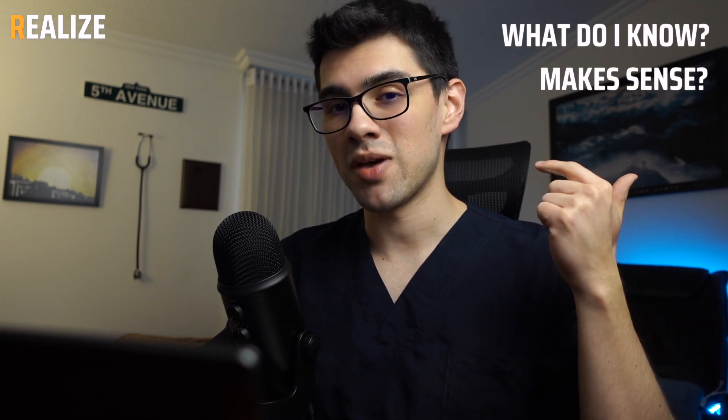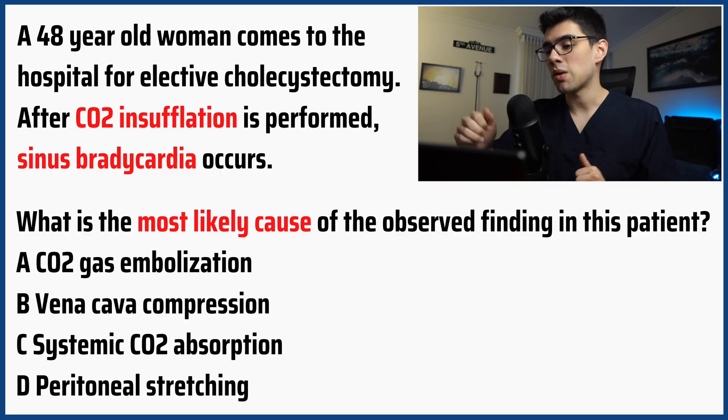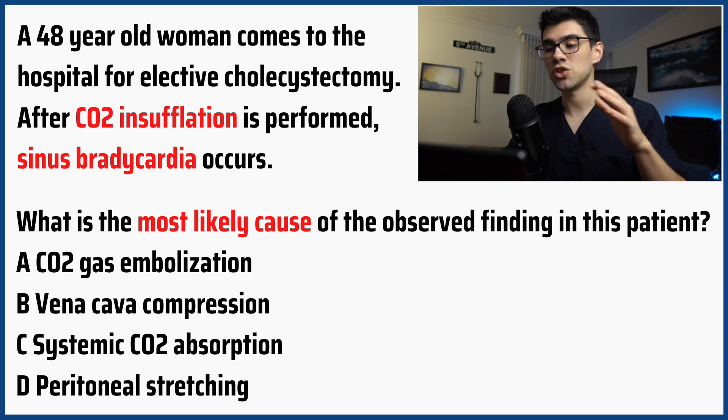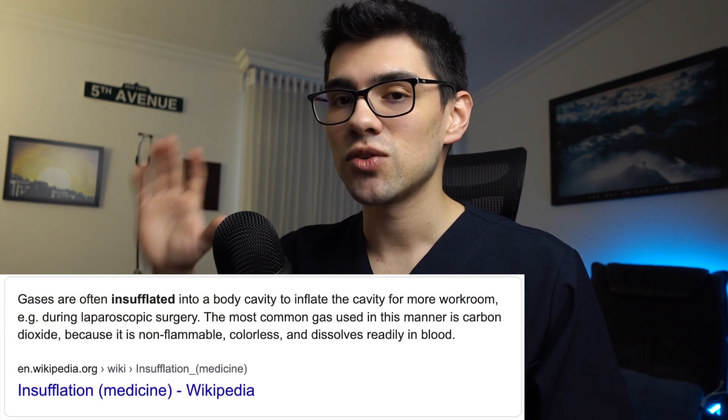After you rule out everything you could, you pass on to the final R: realizing that the few things you know can probably give you hints and get you to the right choice, even though at first you may feel clueless about it. All you have to do is ask yourself two questions with each of the choices: what do I know, and would it make sense? For example, let's say this question pops up on your exam and you don't know why this woman developed bradycardia after CO2 insufflation. Don't panic — you don't even need to know what CO2 insufflation is to get the question right.